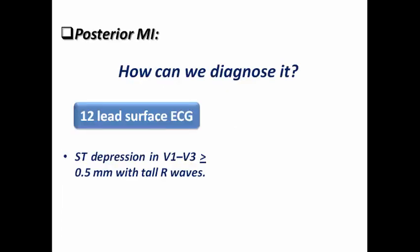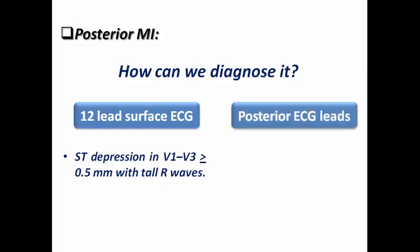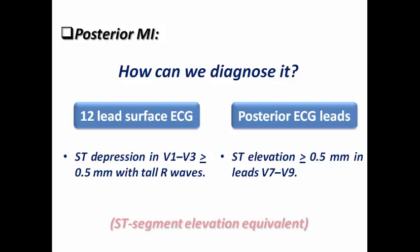To diagnose posterior MI: on the 12-lead surface ECG look for ST depression with tall R waves in the right precordial leads; on the posterior ECG leads, ST elevation of more than or equal to 0.5 mm in leads V7, V8, and V9 is sufficient to diagnose posterior MI. Posterior STEMI is considered equivalent to ST elevation because it actually is ST elevation in the posterior wall of the heart, confirmed by the posterior ECG leads.